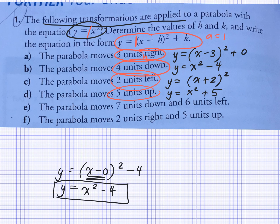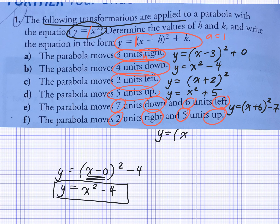Seven units down and six units left: Y is equal to bracket X plus 6 squared minus 7. Perfect. And the last one — it's going two units to the right and five units up: Y is equal to bracket X minus 2 squared plus 5.